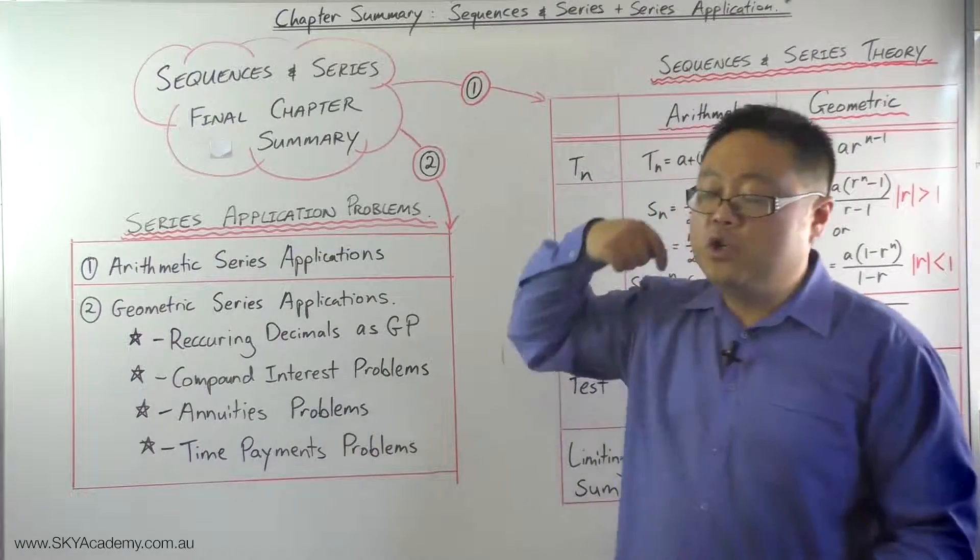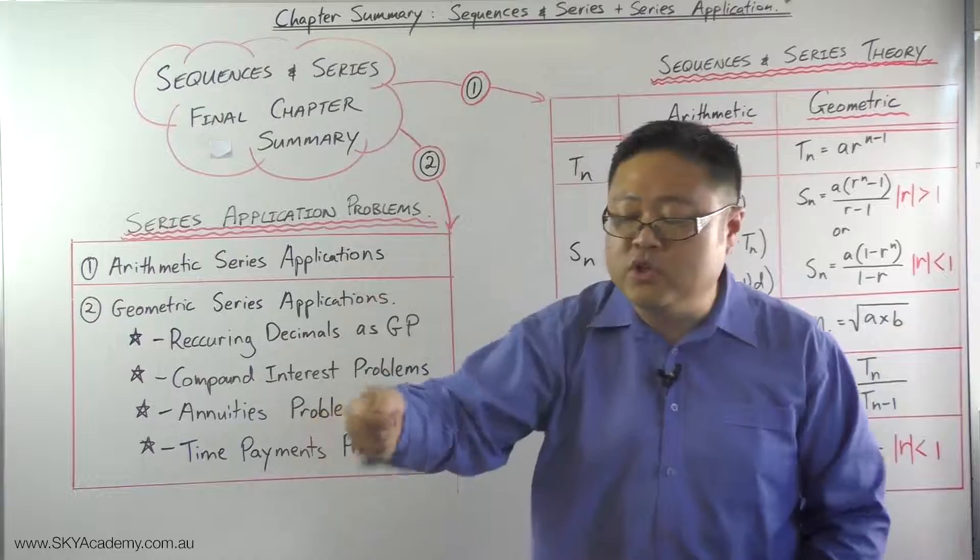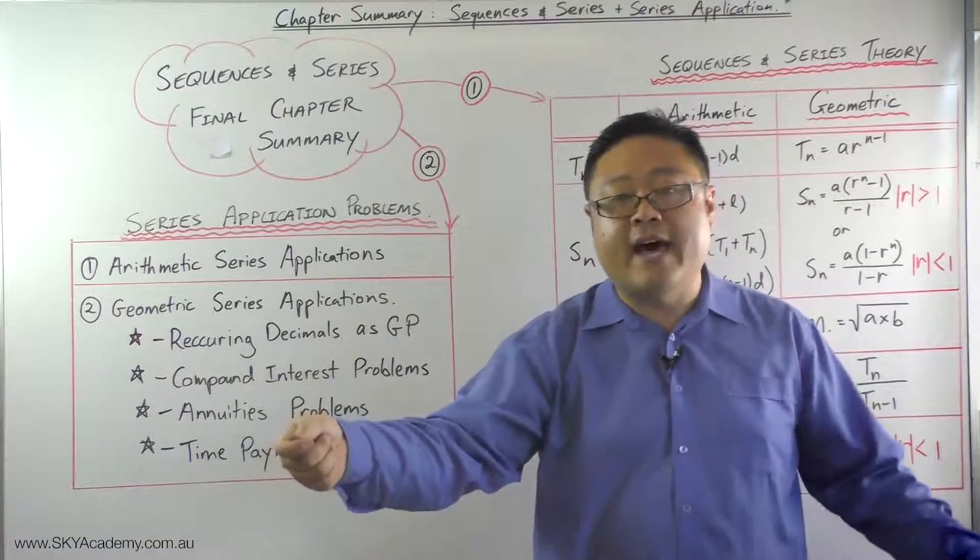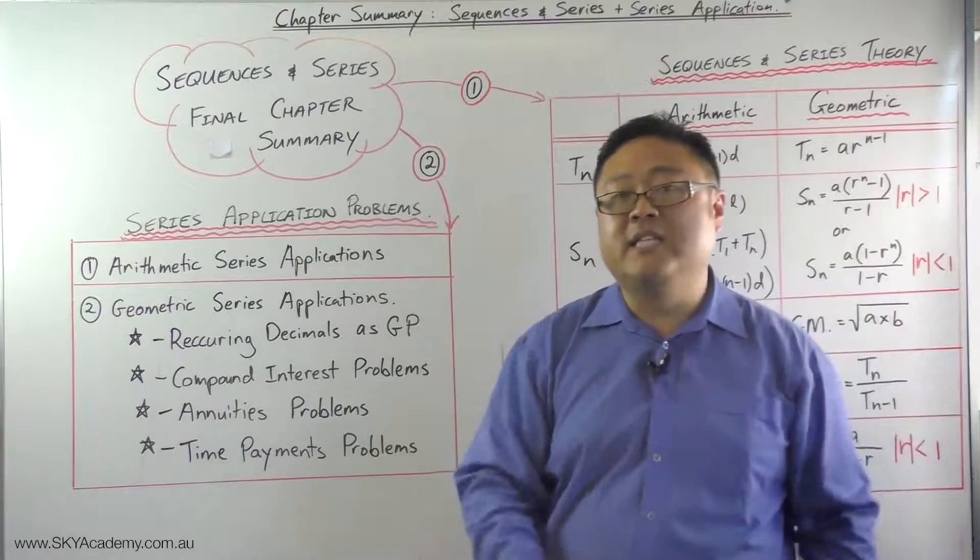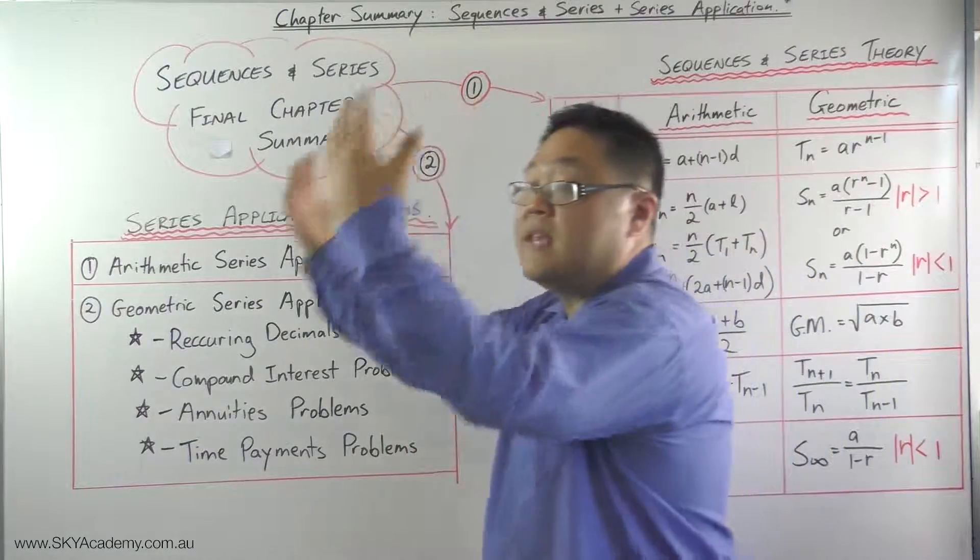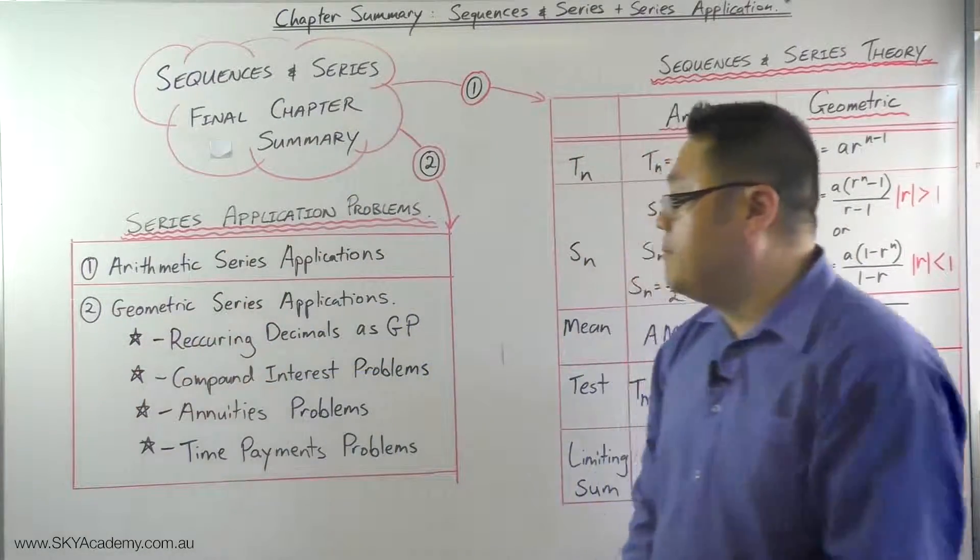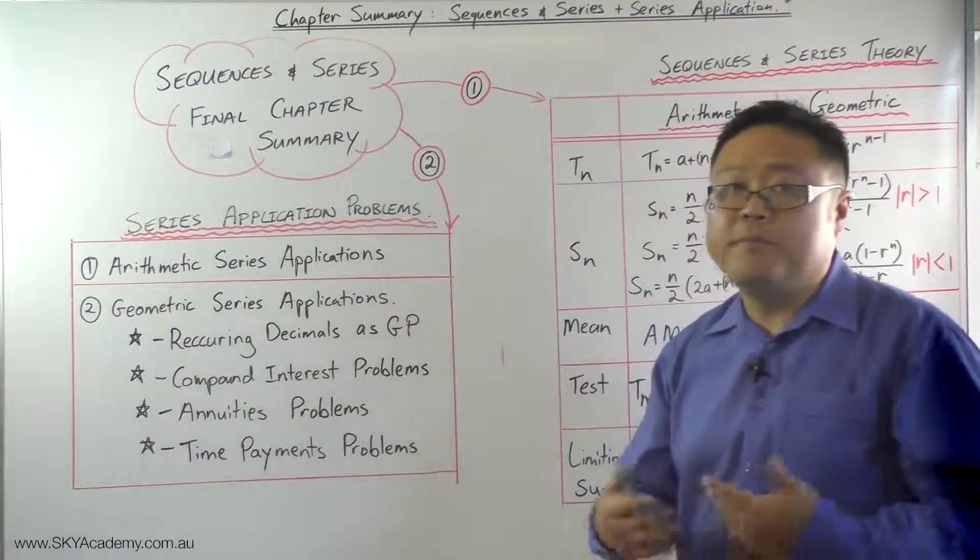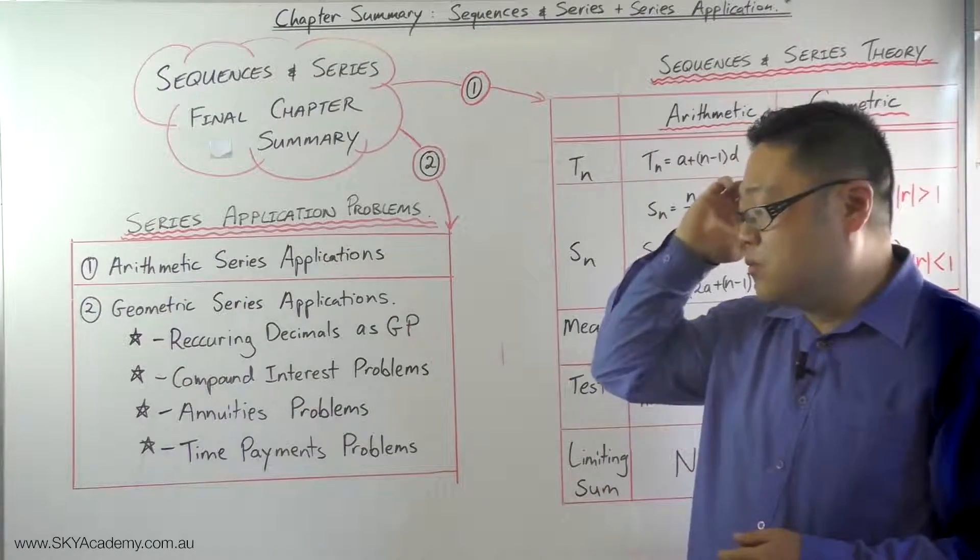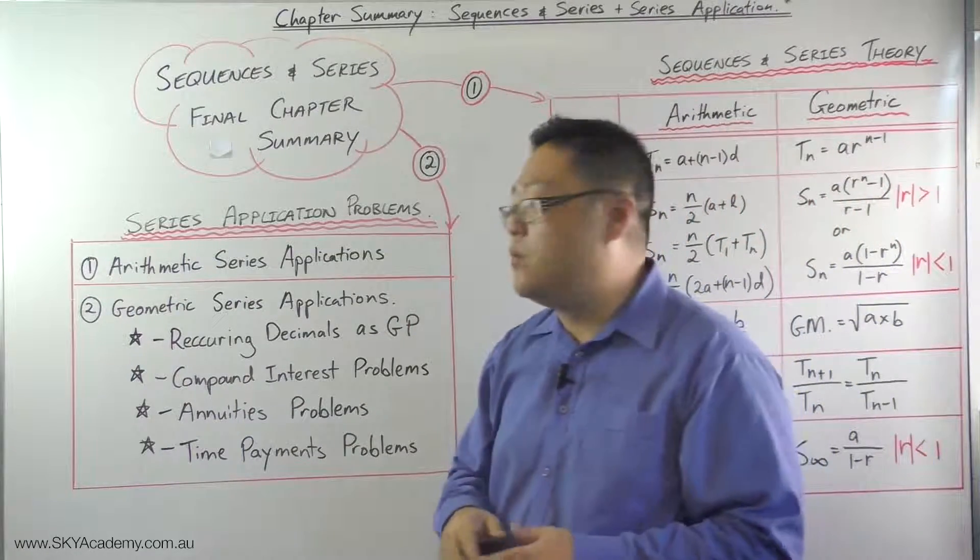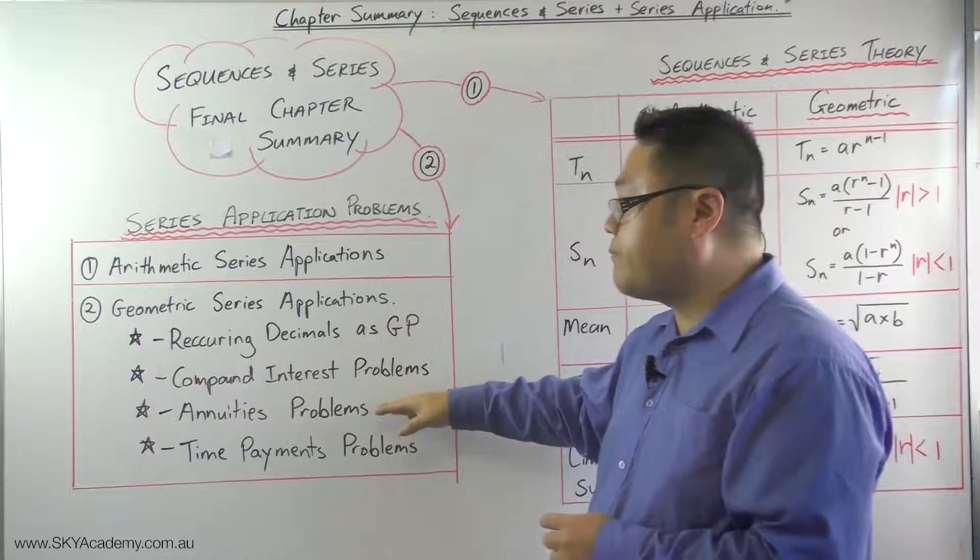We worked out what the final amount at the end is going to be, so that's called the future value of the annuity, and you should be able to work out the future value of an annuity. You also need to be able to work out the present value of an annuity, which is what amount that you need to start with.